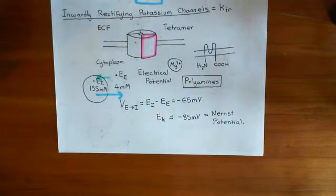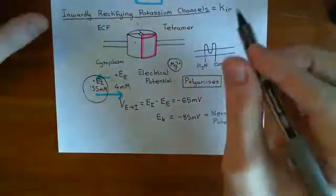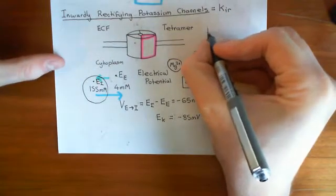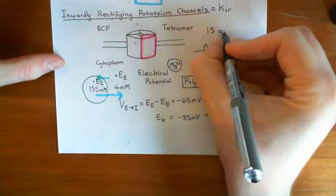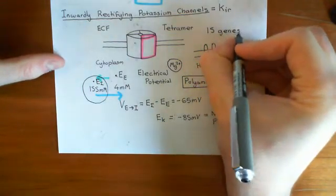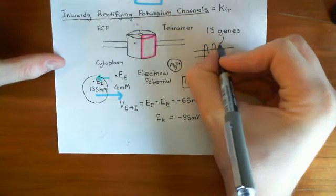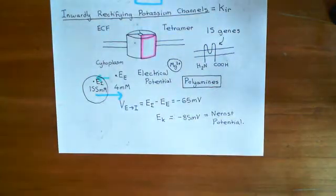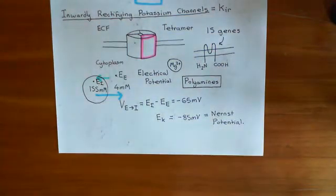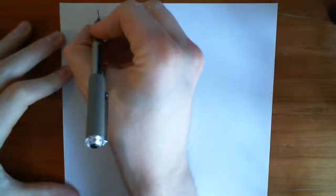Now I want to talk about the diversity in the subunits of the inwardly rectifying potassium channels. What would be beautifully simple is if there was just one gene called the inwardly rectifying potassium channel gene, which made this protein, and you stuck four of them together to get your channel. It's not that simple unfortunately. Instead there are 15 genes which all code for proteins that can form a quarter of an inwardly rectifying potassium channel. We have put them into seven different families.